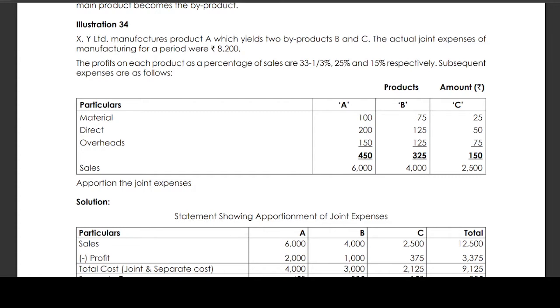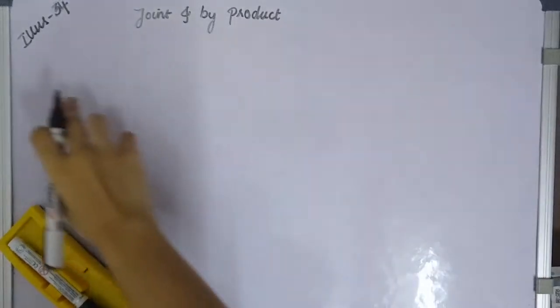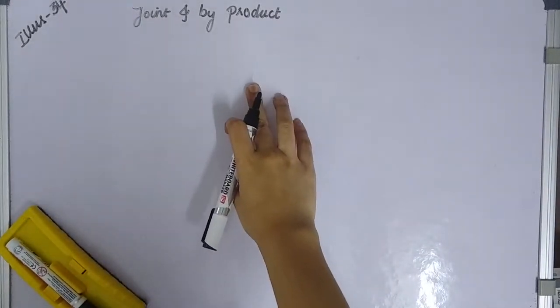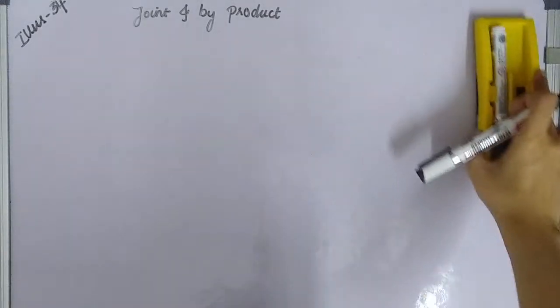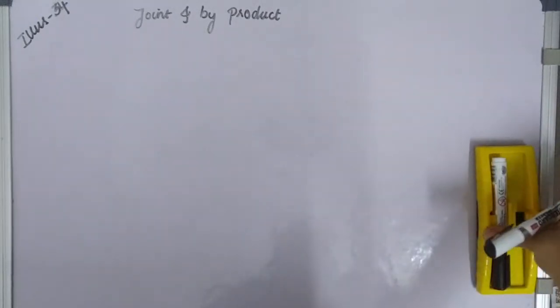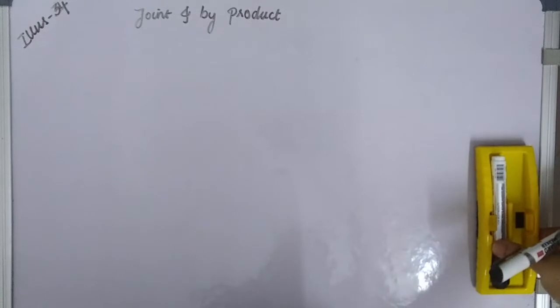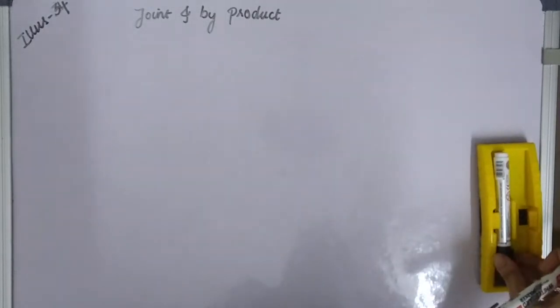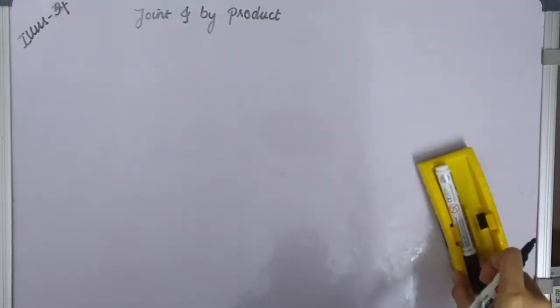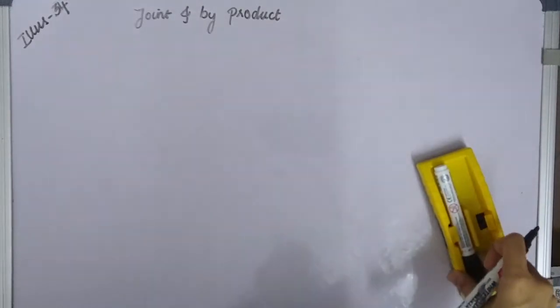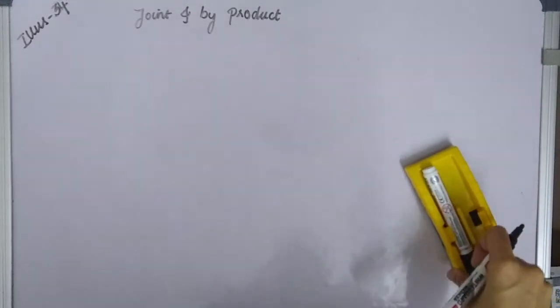Apportion the joint expenses. So this is joint and byproduct process costing - one main product plus two byproducts. We need to derive the selling price, gross profit, because the subsequent expenses are detailed.